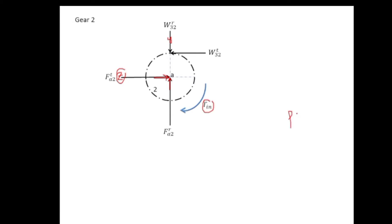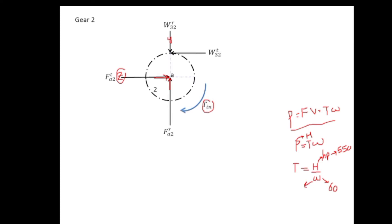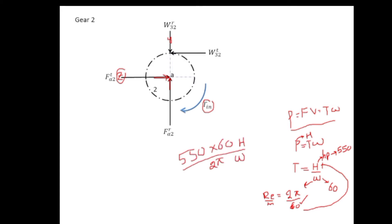Now let's find the input torque. We know that power P equals torque times omega (T·ω), so torque equals P divided by omega. In this chapter, power is represented by H, so torque equals H divided by omega. To convert from horsepower to lbf units, multiply by 550. Omega is in rpm, so we convert by writing 2π/60 radians per second. Combining these conversion factors gives a simplified expression.